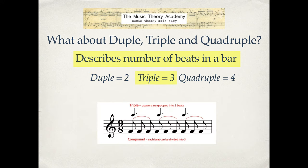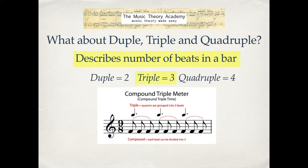What about compound triple? Here's nine-eight — not that common a time signature, but you might come across it. There are nine quavers in every bar, grouped into three beats, so it's triple. And it's compound because each beat can be divided into three. This is described as compound triple meter. Any time signature with nine as the top number is going to be compound triple meter.